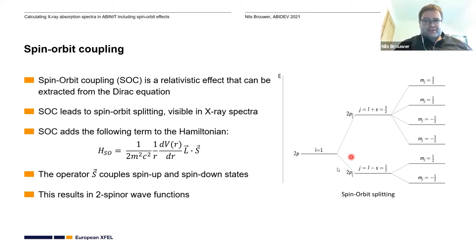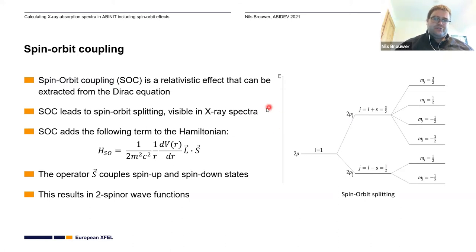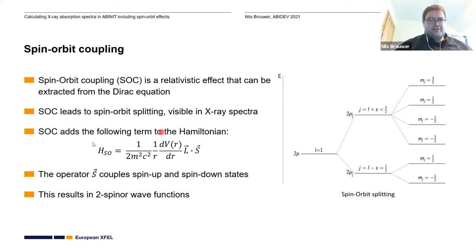The most important effect is the spin-orbit splitting. For example, if you have a 2p level with spin-orbit coupling, it will split up into 2p 3/2 and a 2p 1/2 level. And that is something that you can see in X-ray spectra. So it's very important to have this included in your calculation if you want to simulate X-ray spectra. And in ABINIT itself, spin-orbit coupling is implemented via this spin-orbit coupling term.